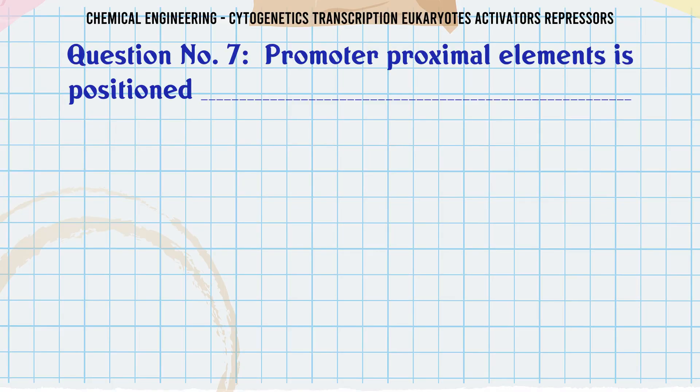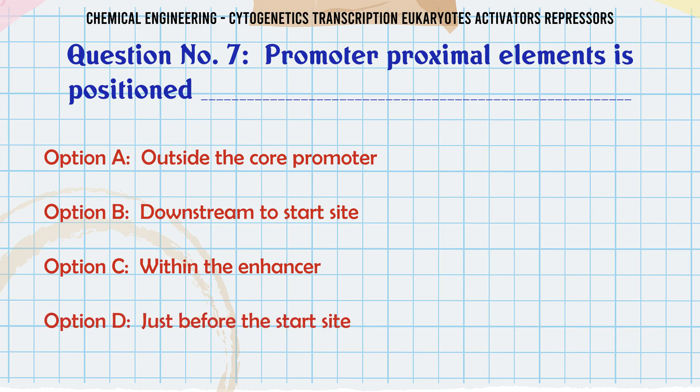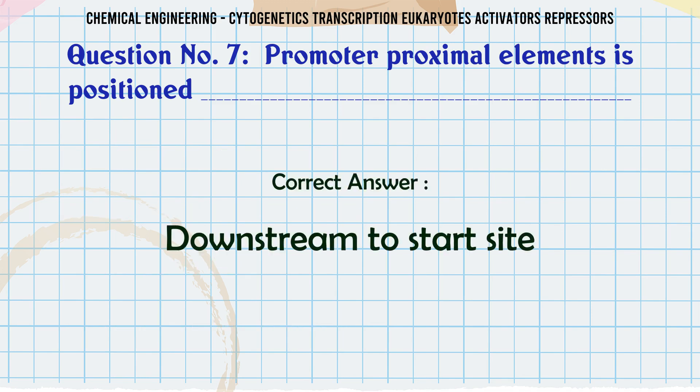Promoter proximal elements is positioned: A. Outside the core promoter. B. Downstream to start site. C. Within the enhancer. D. Just before the start site. The correct answer is Downstream to start site.